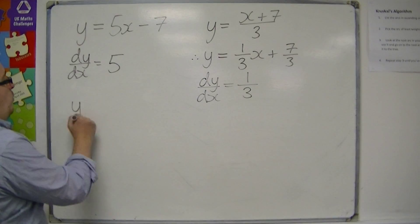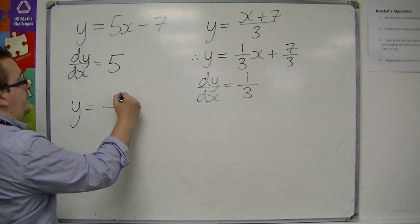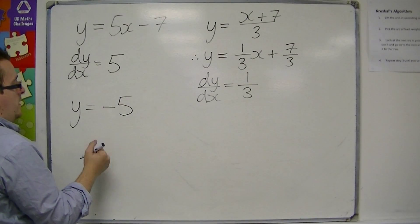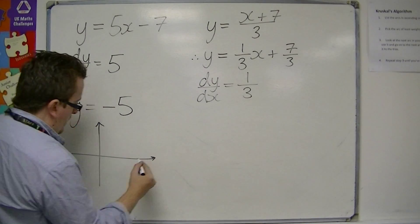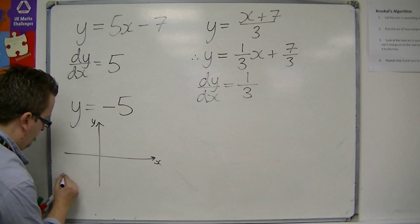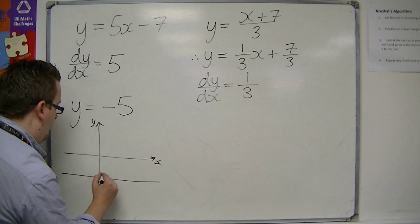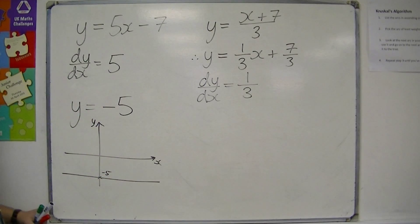If you had something like y is equal to minus 5, then minus 5 is a horizontal line that goes through minus 5 on the y axis.